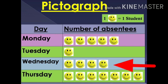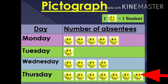For Wednesday, we draw 4 smileys because 4 students were absent on Wednesday. For Thursday, we draw 7 smileys because 7 students were absent on Thursday.